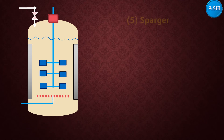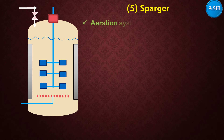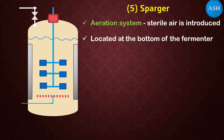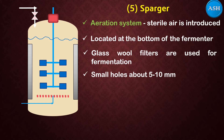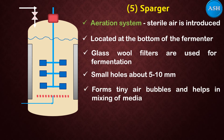The fifth part is the sparger, which is an aeration system — meaning that sterile air is introduced into the fermenter. It is located at the bottom of the fermenter, as you can see in the diagram. Glass fiber filters are used to sterilize the air entering the fermenter. The sparger has very small holes, about 5 to 10 millimeters in size, which form tiny air bubbles and help in mixing of the media.